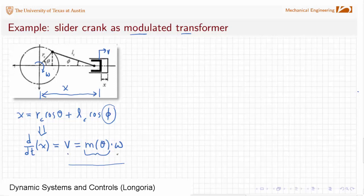But then what you find is that, oh, that looks like a transformer. That relates omega and velocity, and there's some modulus here. And I'm going to drop ones on each side to represent that that's omega and that's a v. And the way we show modulation is we say, oh, this m of theta, I need to get that theta from somewhere, and we'll use a signal bond.